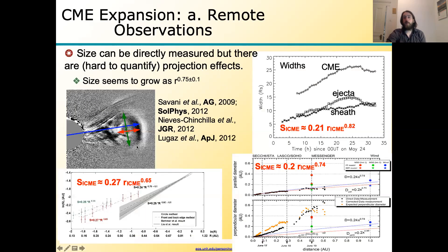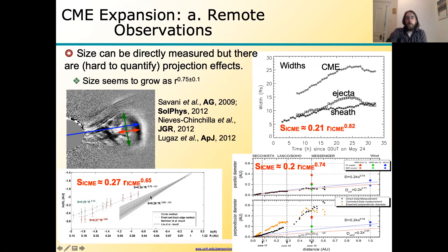When we go to measure the size of coronal mass ejections, there are some projection effects which are not necessarily very easy to quantify. Work by myself and collaborators — looking at various ways to measure CME size — pretty much all find that the expansion, the size of the CME, scales as less than linear with distance, typically on the order of r to the power 0.7.